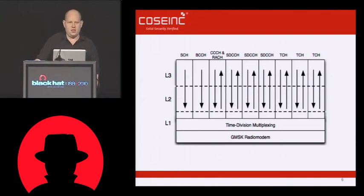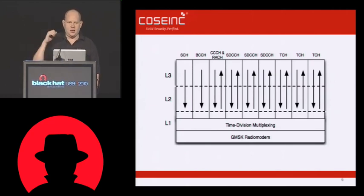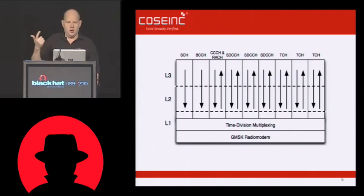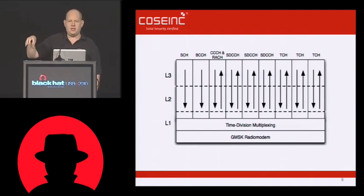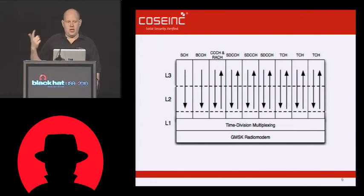L1 decodes or encodes the data, passes it to L2, and L2 figures out which part of L3 should handle it. L3 contains the application layer stuff, including CC, MM, and RR. CC is call control — used for setting up and tearing down telephone calls. MM is mobility management — used for authentication and moving from one cell to the next, dealing with the auth part of the GSM stack. RR is radio resource — used for opening and closing channels. So those three things: CC, MM, RR — L123.